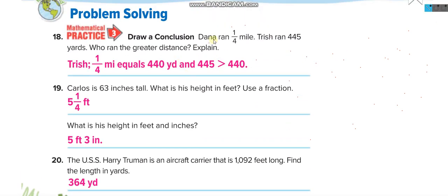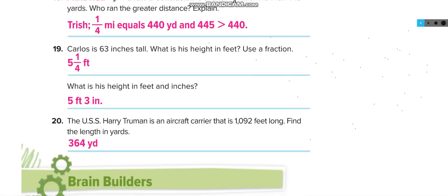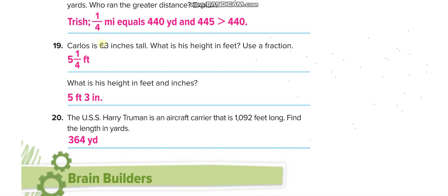Word problem: Tom ran one quarter mile and Trish ran 445 yards. One mile equals 1760 yards, so one quarter mile equals 1760 divided by 4, which is 440 yards. Since 445 is more than 440, Trish ran more. Next problem: someone is 63 inches tall — find the height in feet.